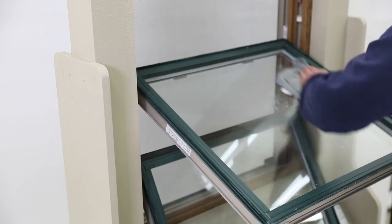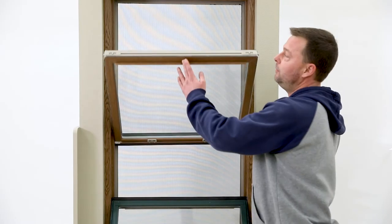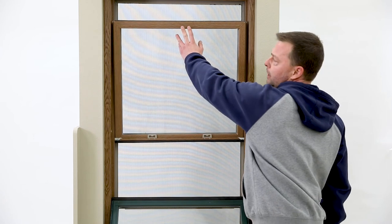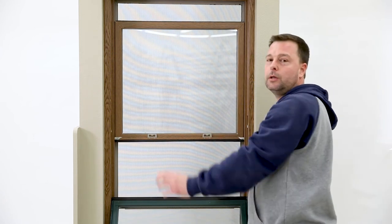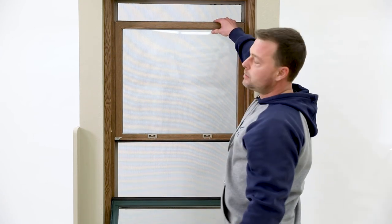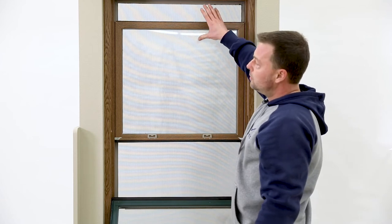simply grab your sash, allow it to pivot all the way back up into the frame. Make sure you hear the click. The tilt latches must engage so this stays where it's supposed to.